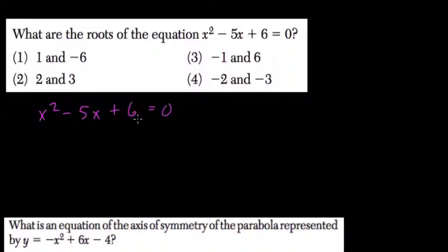is to find factors of the c term, that's this term, that add up to your b term. So in this case, what factors of 6 add up to negative 5?